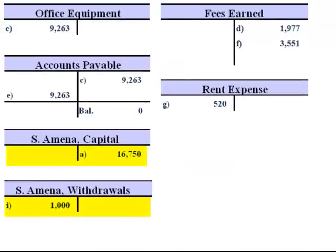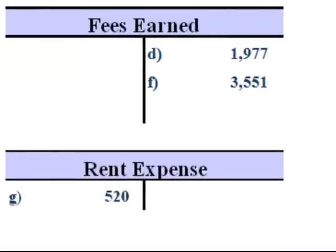The capital and withdrawal accounts don't need to be totaled, because they too are only affected by a single transaction. Fees earned, the revenue account, has total credits of $5,528. And rent expense has a single transaction.